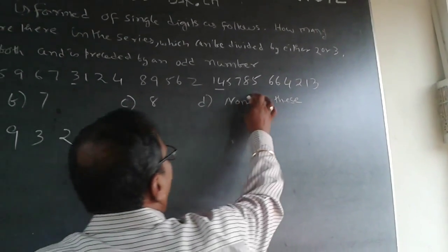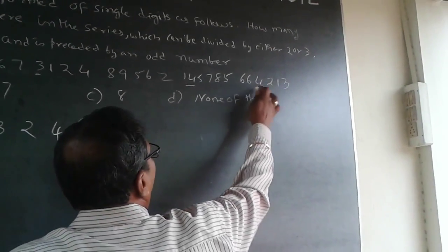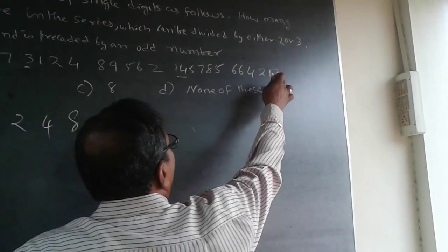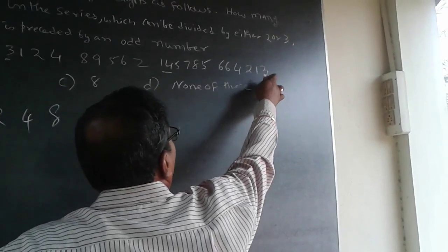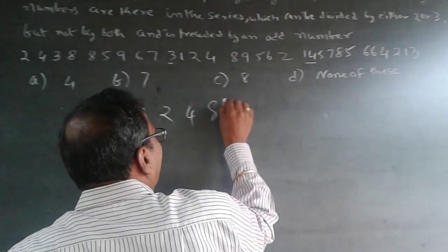5 is ruled out. 6 is ruled out. 4 — the preceding number is even. 2 — preceding number is even. 1 is ruled out. 3 is divisible by 3 and the preceding number is an odd number, so this 3 qualifies.